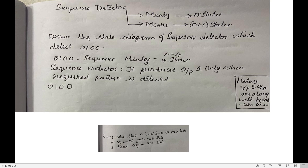Let us start this question — how to design a sequence detector which detects sequence 0100 using Mealy method. In Mealy method, the number of states equals n, the length of the sequence. The sequence 0100 has four bits, so the number of states is four. If the sequence were 01001 with five bits, you would need five states. In this question, n equals 4, so I need four states.